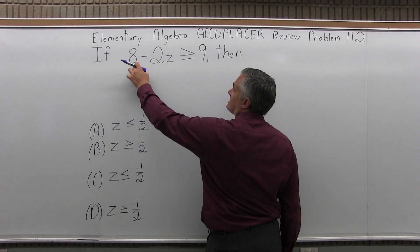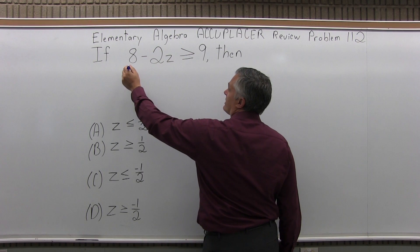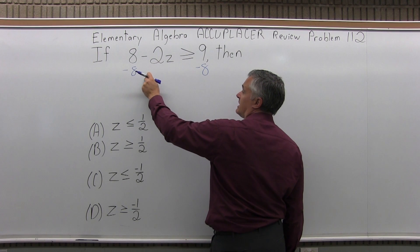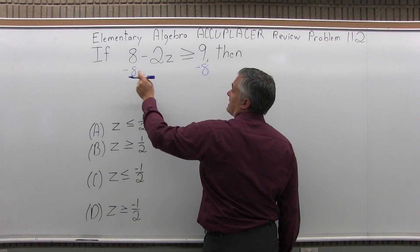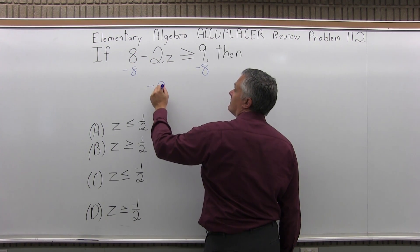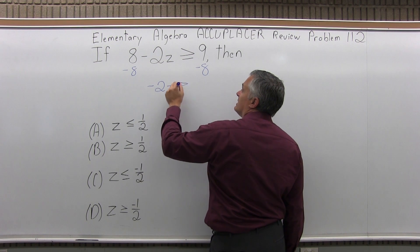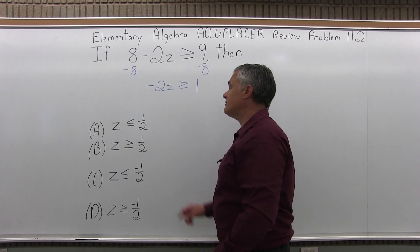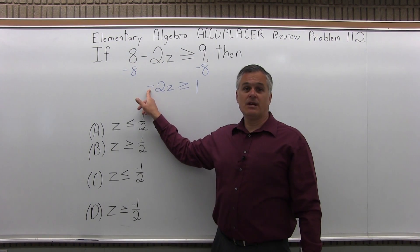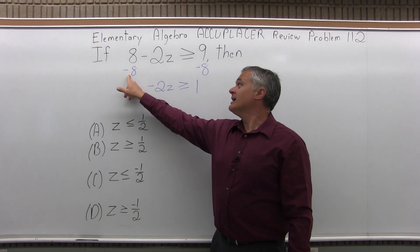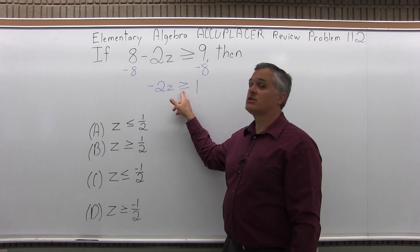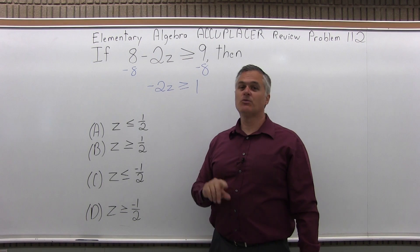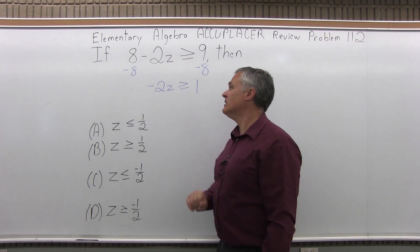Let me start by canceling the 8 on the left side of the inequality. On the left I'll do minus 8, on the right I will also do minus 8 — I'm doing the same thing on both sides. Positive 8 and negative 8 cancel, so I have negative 2z is greater than or equal to positive 9 minus 8, which is positive 1. Notice, don't lose the negative in front of the 2z. Even though I used a negative value here, I didn't switch the direction of the inequality symbol because I'm adding a negative to both sides — it's only when you multiply and divide that you have to flip the symbol.